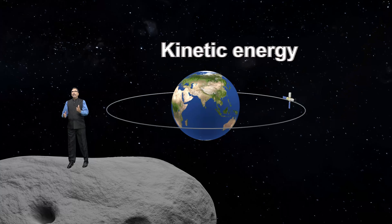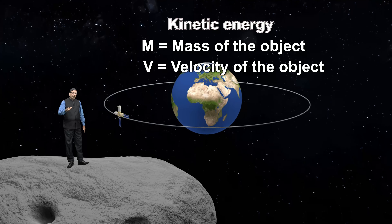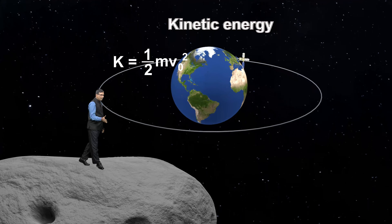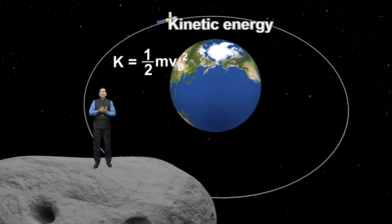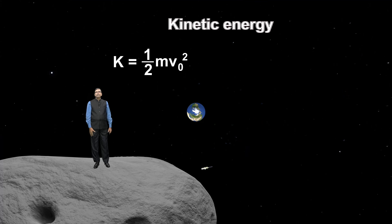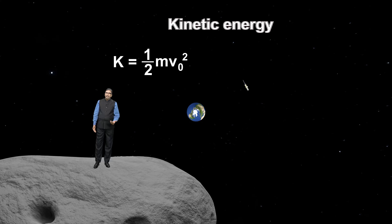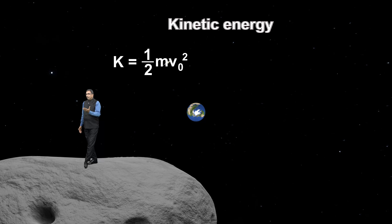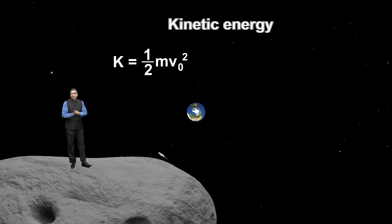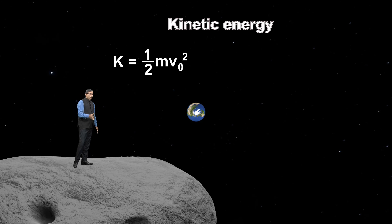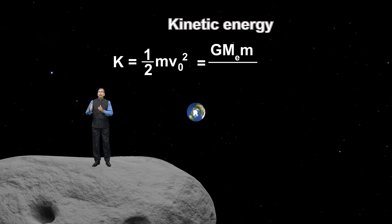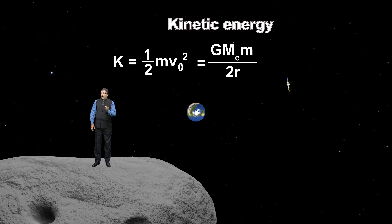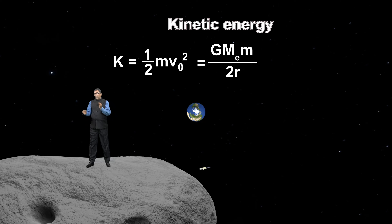You know that if m is the mass of the object and v is the velocity of the object, then kinetic energy of the object is equal to half m v squared. If m is the mass of the satellite and v naught is the orbital velocity of the satellite, then kinetic energy of the satellite is half m v naught squared. The orbital velocity is equal to under root of G Mₑ m upon r. Therefore, the kinetic energy is equal to G Mₑ m upon 2r. R is the radius of orbit of the satellite.